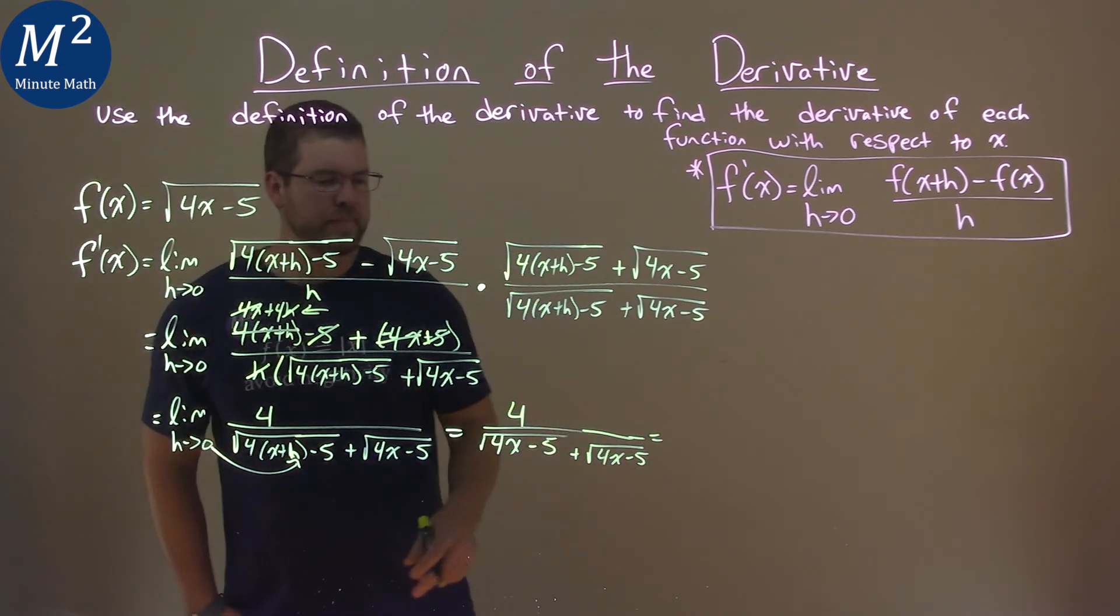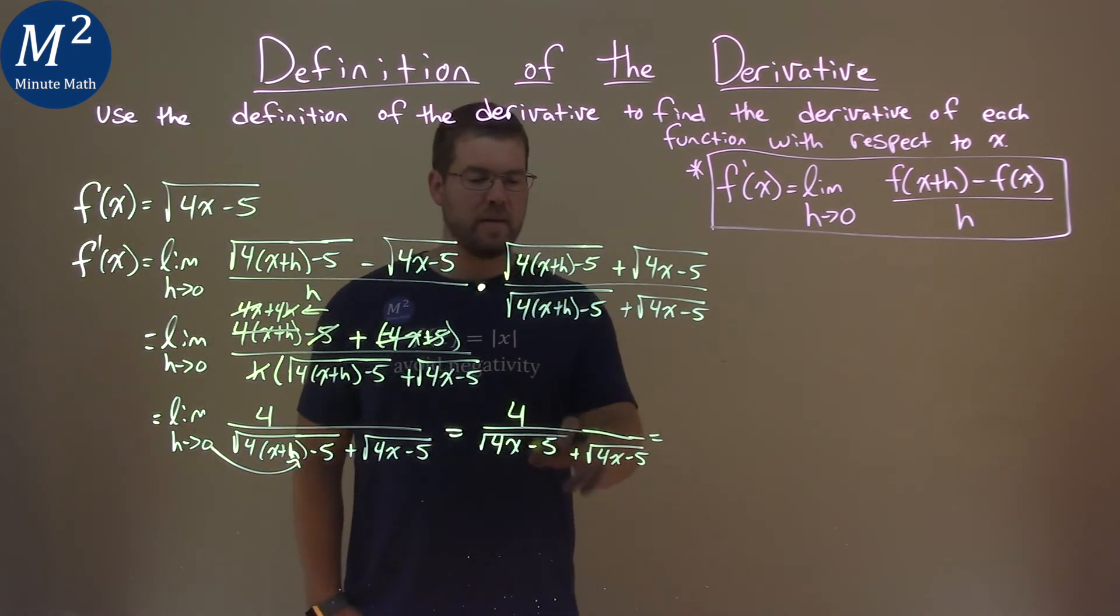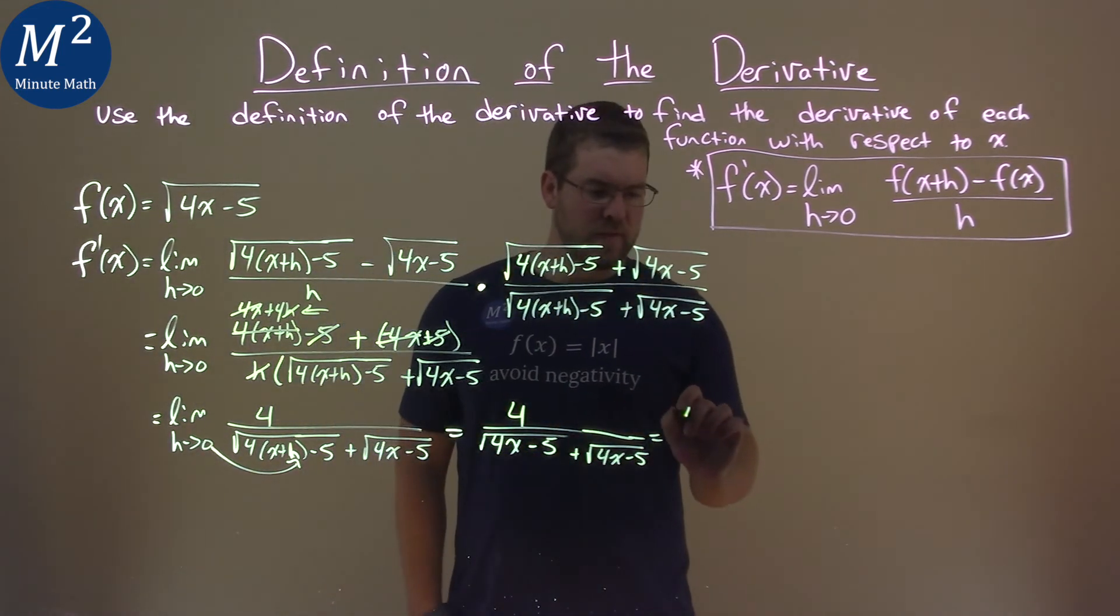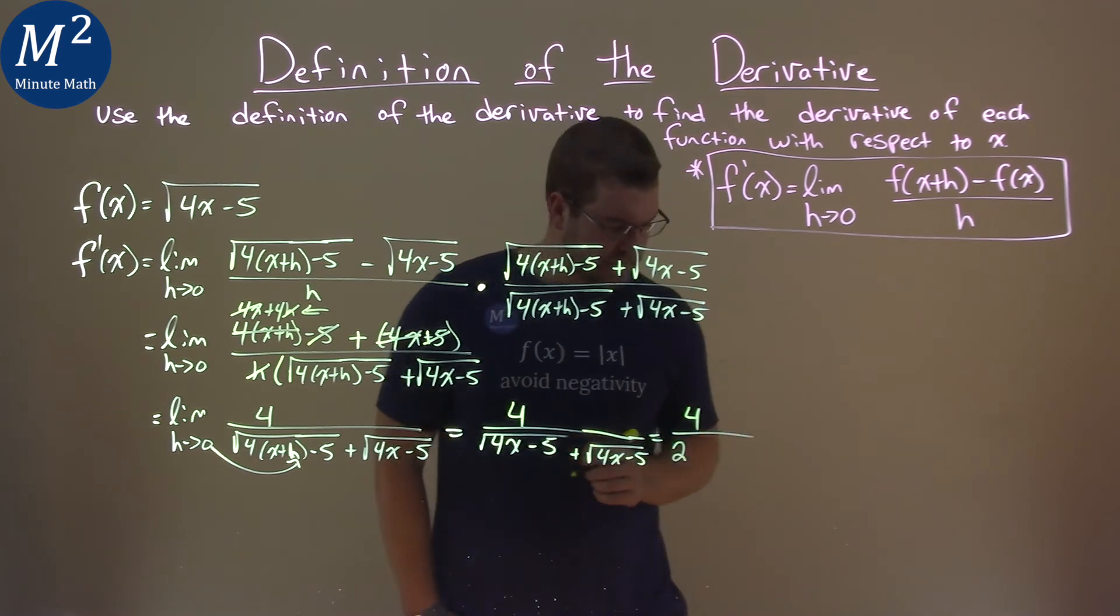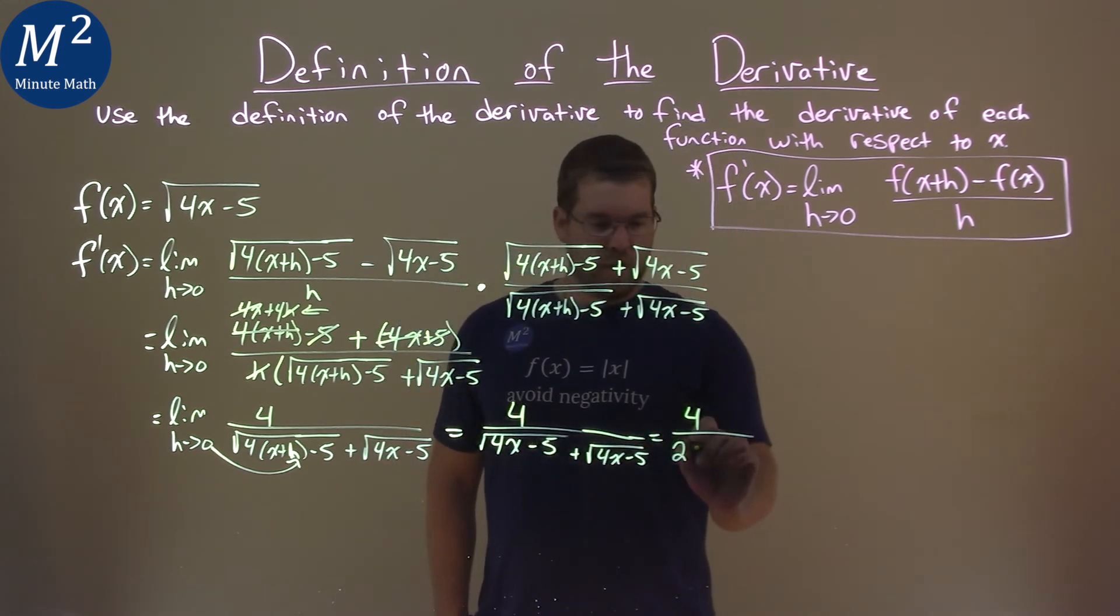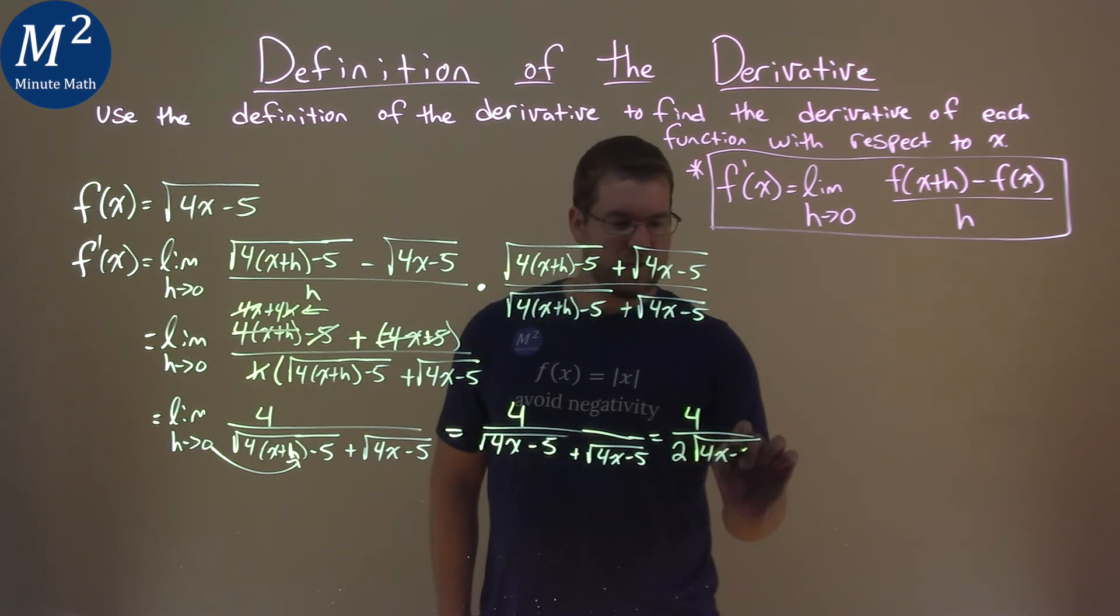Well, notice one thing. Square root of 4x minus 5 is added by itself. So, we can write this as 4 over 2 times square root of 4x minus 5.